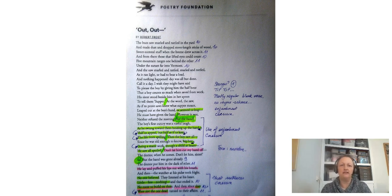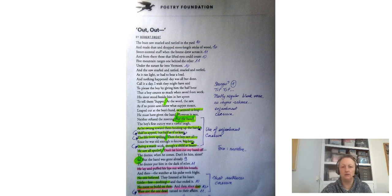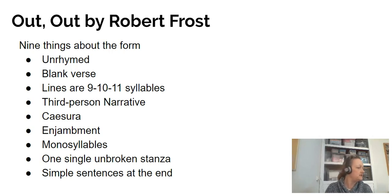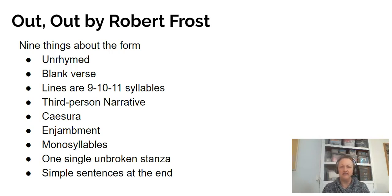I was noticing all of the things we've been looking at over the last four videos and thinking about what the writer is doing here in terms of form — what choices have they made about how they've set the poem out and what words go on each line. So these are the nine things I particularly noticed. It's unrhymed, written in blank verse, lines are between nine and eleven syllables. It's written in third person narrative, apart from one bit — 'I wish they might have said' — so there is a narrator there, but they only crop up once.